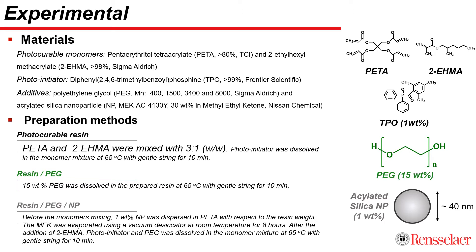Starting with our materials, photocurable resins are composed with PETA and 2-EHMA monomers by 3 to 1 weight fraction. The photoinitiator used was TPO, added at 1 weight percent against the photocurable resin.